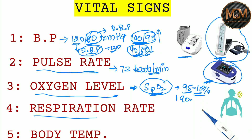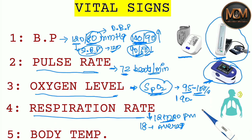Now let's talk about respiration rate — the rate at which you are breathing. The normal value of respiration rate is 12 to 20 per minute, and the average is about 18 per minute. As for the pulse rate, the average is 72 beats per minute, but it can range from 62 to 110 beats per minute and still be considered normal.